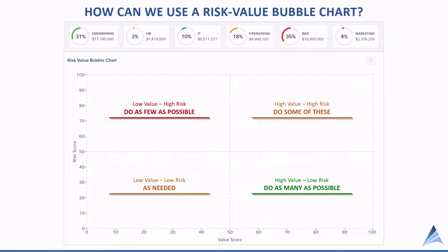The lower right quadrant is our high value, low risk — that's our best quadrant. In general, we want to do as many of these projects as possible. It's going to generate more value for our organization, and with having lower risk, it should be easier to execute or complete.